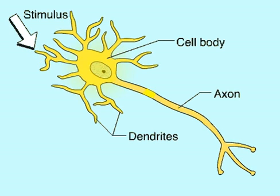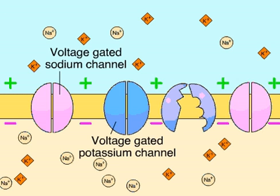How does the action potential move along the axon? Voltage-gated channels in the membrane open and close depending on voltage changes across the membrane. When no nerve signals are being transmitted, these channels are closed.